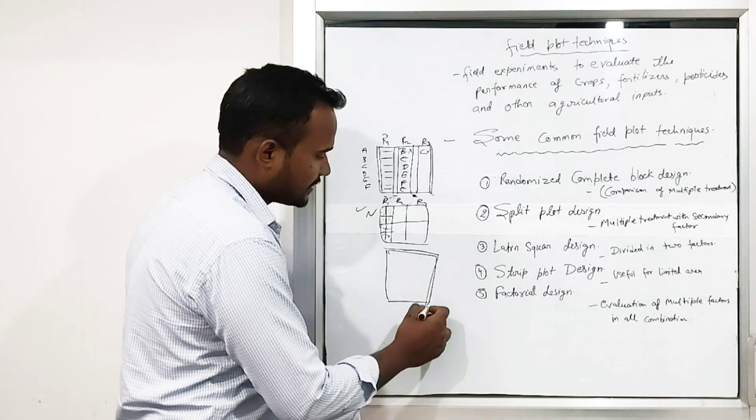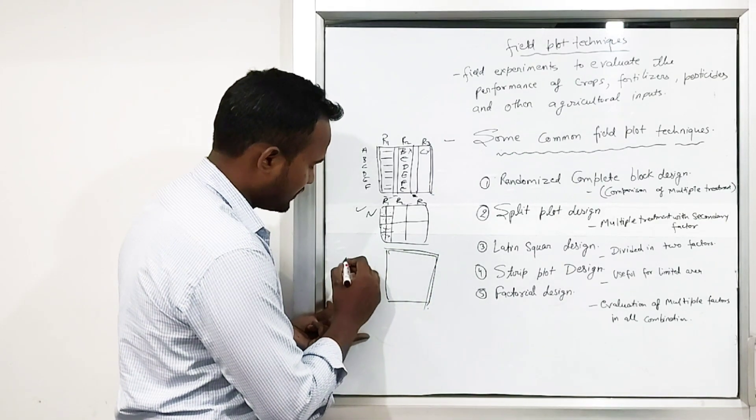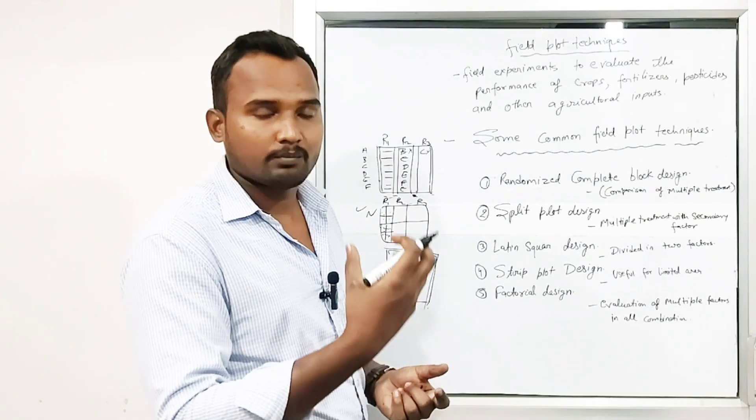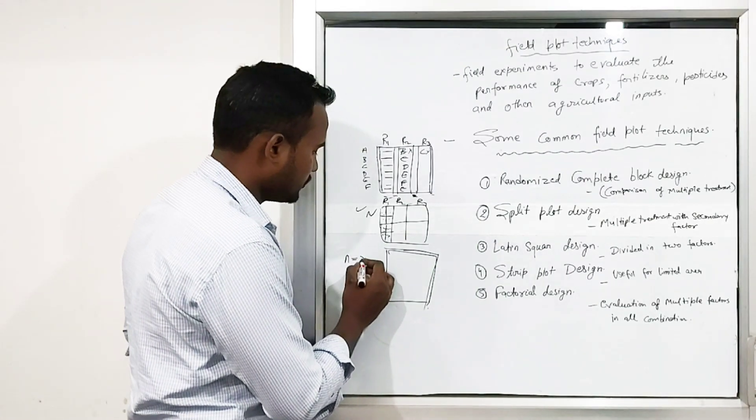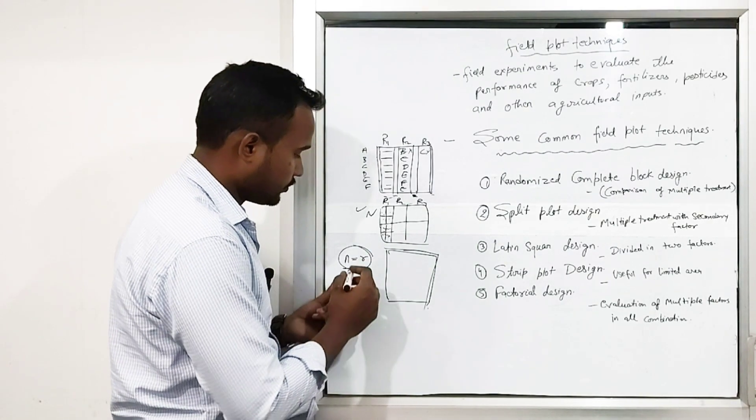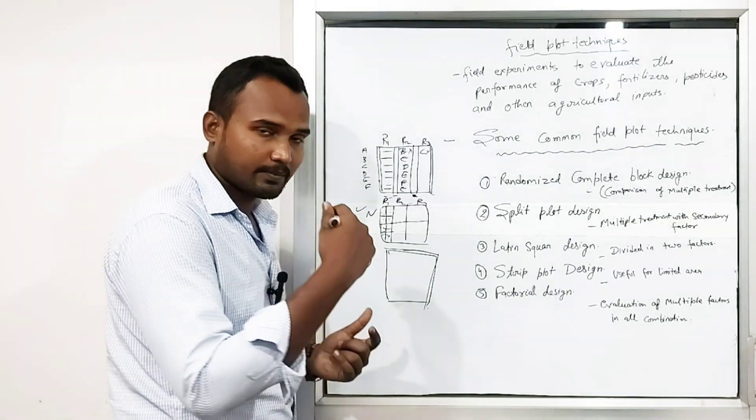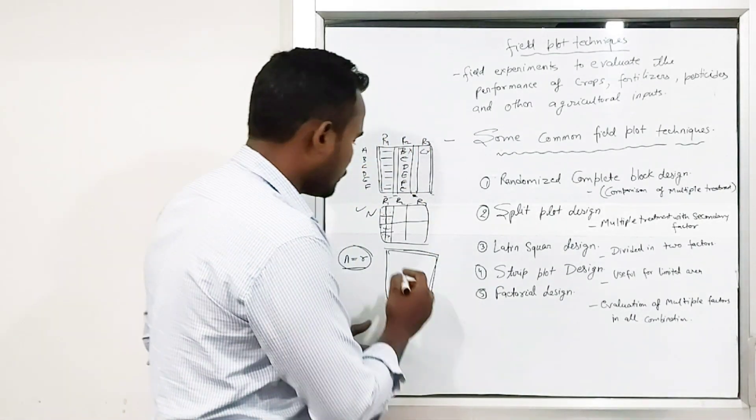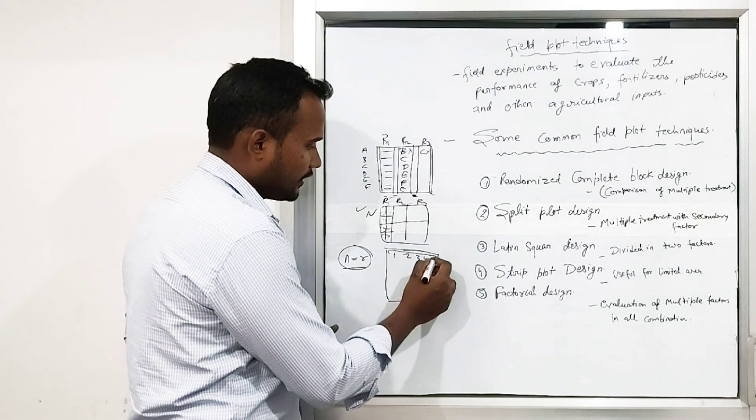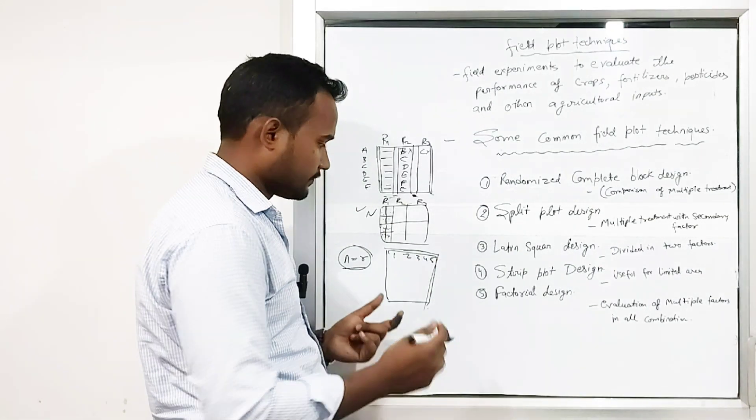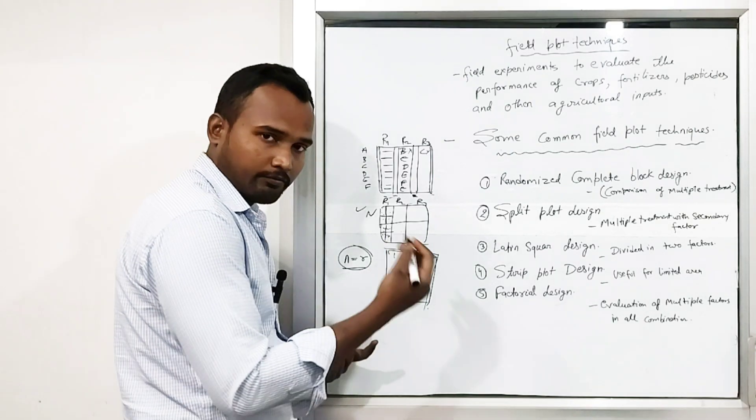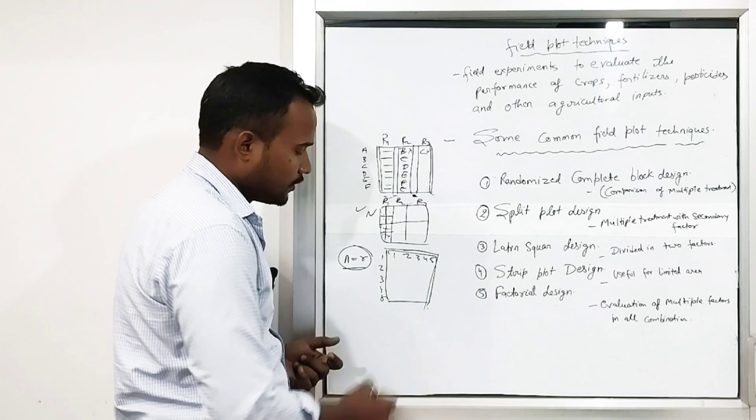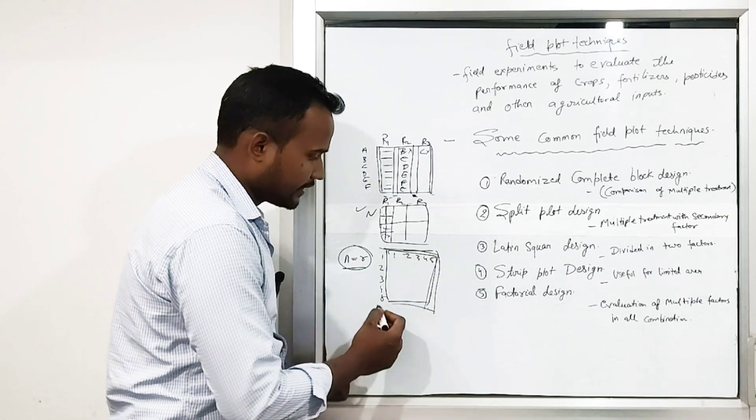Which is the number of replications, which is 5. So 1, 2, 3, 4 and 5. So this is the same, which is the Latin square design.